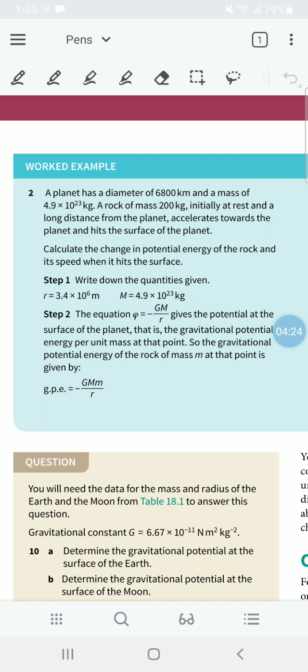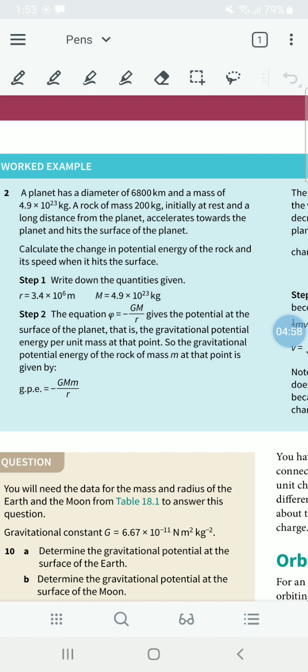Calculate the change in potential energy of the rock and its speed when it hits the surface. We have to write down whatever details they have given us. They have given r, which is the distance: 3.4 × 10^6 meters. Then M has been given as 4.9 × 10^23 kilograms.